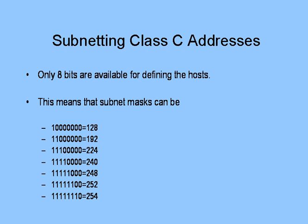That means I only have 8 bits from the last octet of that Class C IP address to work with. Now, what does that mean in decimal and binary? In binary, it looks like this: if I take one bit from the host portion, my subnet mask is going to be 255.255.255.128. Take two bits, add them together — 128 and 64 — and the subnet mask is now 192. Take three bits: 224. Take four bits: 240. And five bits adds up to 248.